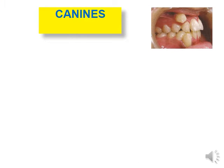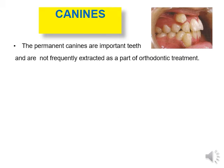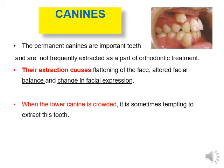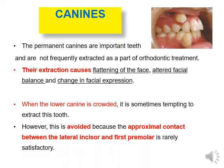Canines: the permanent canines are important teeth and are not frequently extracted as part of orthodontic treatment. Their extraction causes flattening of the face, altered facial balance, and change in facial expressions. When the lower canine is crowded, it is sometimes tempting to extract this tooth. However, this is avoided because the approximate contact between the lateral incisor and the first premolar is rarely satisfactory.